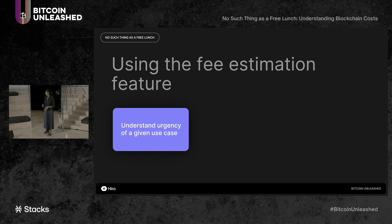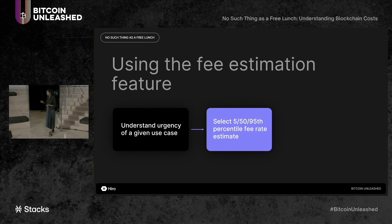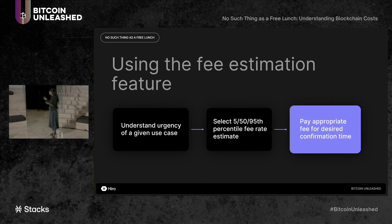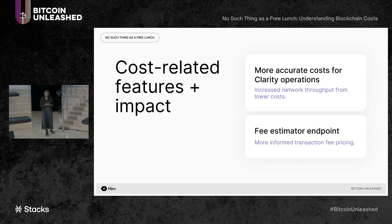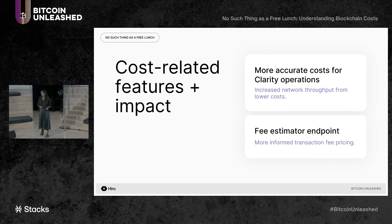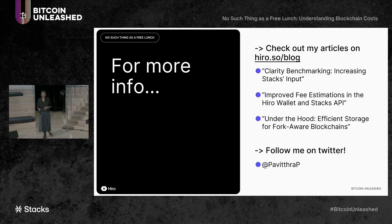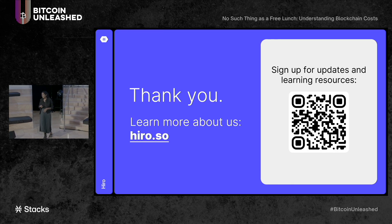To use the fee estimation feature, a user first considers the urgency of their use case, then selects the 5th, 50th, or 95th percentile fee rate estimate accordingly, and pays the appropriate fee for their desired confirmation time. In summary: the Clarity Cost Benchmarking Project yielded more accurate and mostly smaller costs for Clarity operations, increasing network throughput. The Fee Estimator endpoint now allows users and developers to make more informed and competitive transaction fee pricing decisions. For more information, check out my articles on the blog and follow me on Twitter.